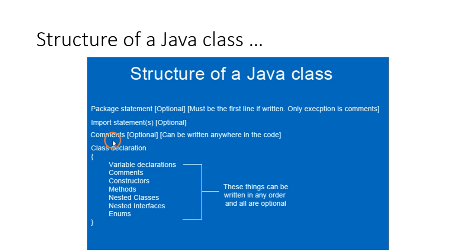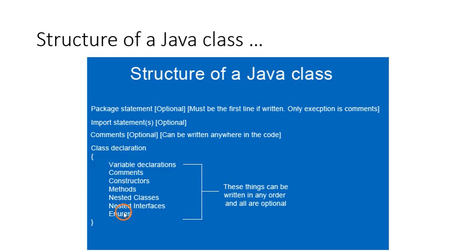Next are comments. I have written them as the third statement here, but actually comments can come as the first statement also — they can be written anywhere, at the end of a line or anywhere in the program. Next comes the class declaration. Inside the class you can create variables, write comments, create constructors, and create methods, which are functions in C.